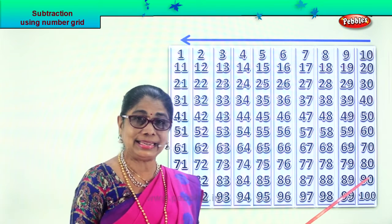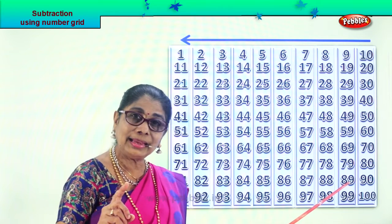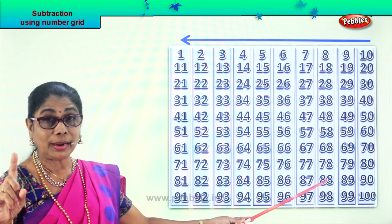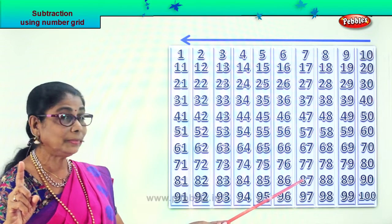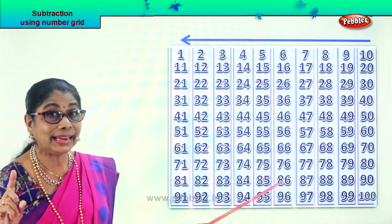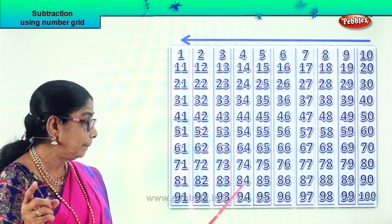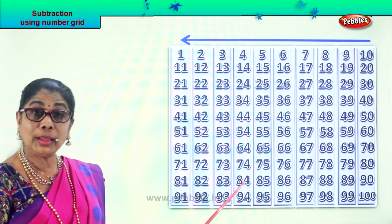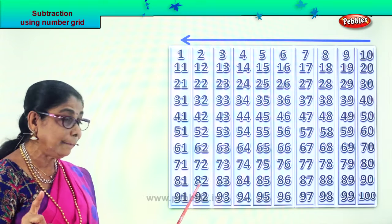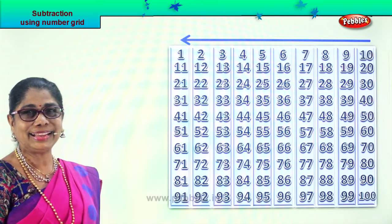Let's look at ninety. Take away one — eighty-nine. Eighty-nine take away one — eighty-eight. Eighty-eight take away one — eighty-seven. Eighty-seven take away one — eighty-six. Eighty-six take away one — eighty-five. Eighty-five take away one — eighty-four. Eighty-four take away one — eighty-three. Eighty-three take away one — 82. 82 take away 1 — 81. Good.